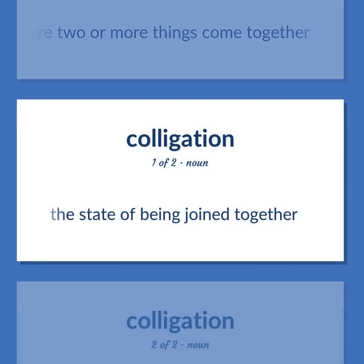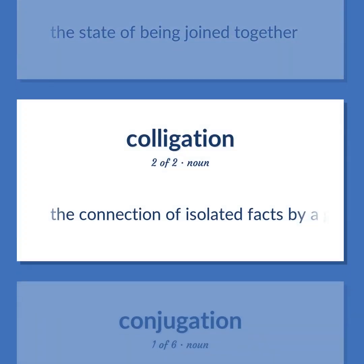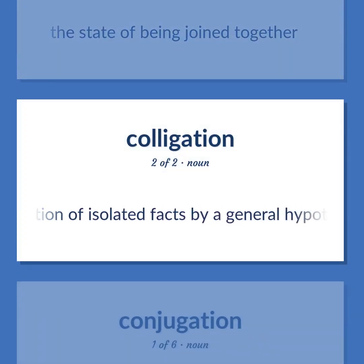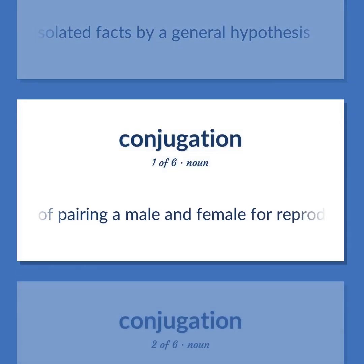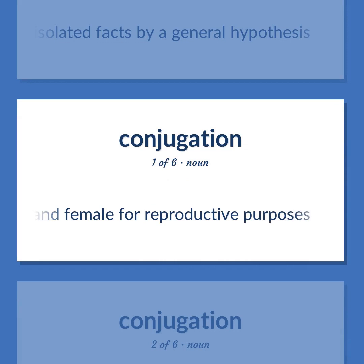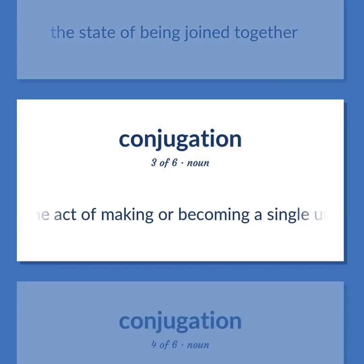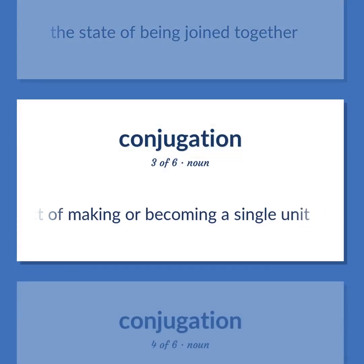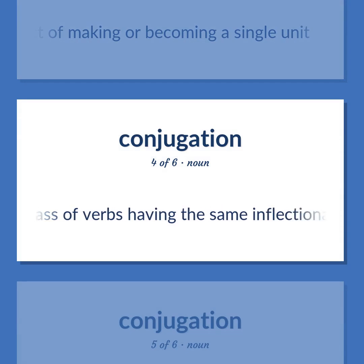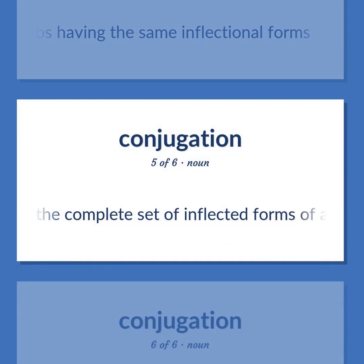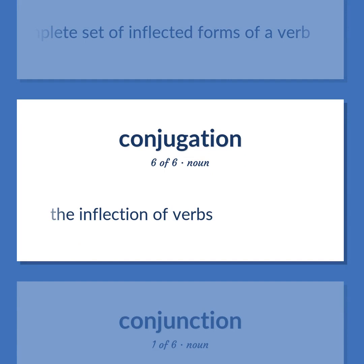Conjugation: The state of being joined together. The connection of isolated facts by a general hypothesis. The act of pairing a male and female for reproductive purposes. The state of being joined together. The act of making or becoming a single unit. A class of verbs having the same inflectional forms. The complete set of inflected forms of a verb. The inflection of verbs.